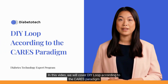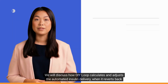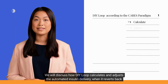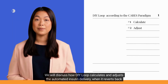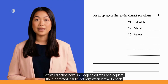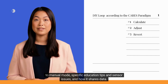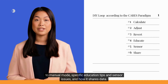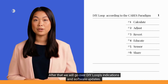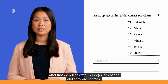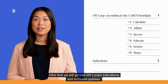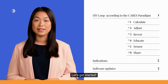In this video, we will cover DIY Loop according to the CARES paradigm. We will discuss how DIY Loop calculates and adjusts the automated insulin delivery when it reverts back to manual mode, specific education tips and sensor issues, and how it shares data. After that, we will go over DIY Loop's indications and software updates. Let's get started.